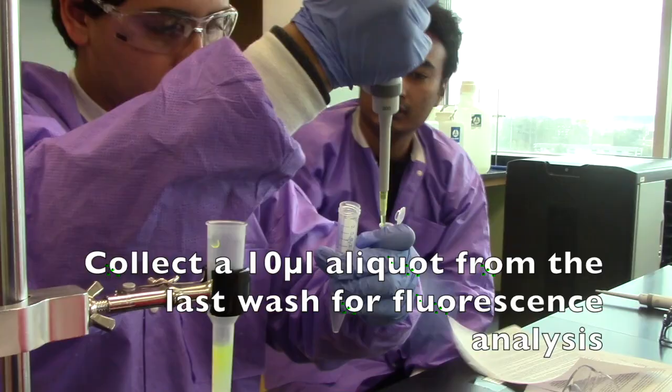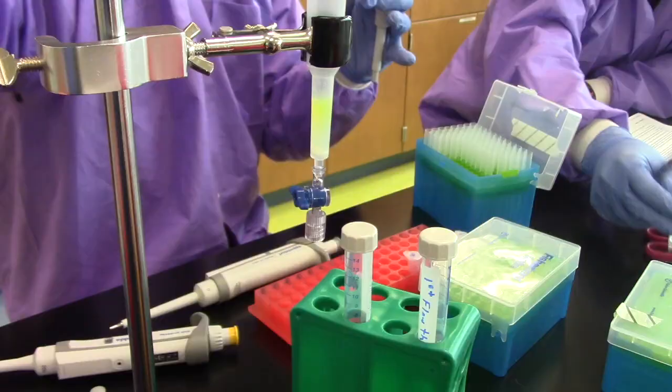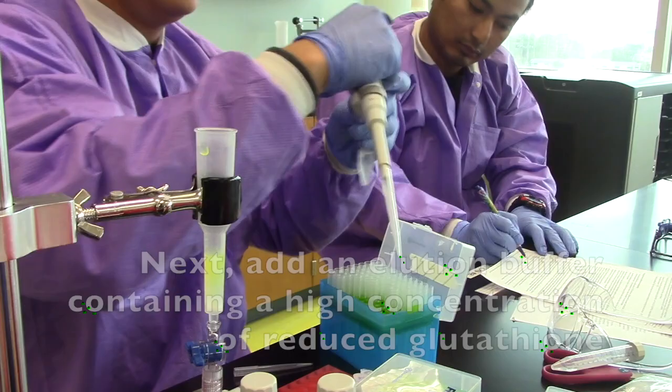Next, add an elution buffer containing a high concentration of reduced glutathione. This enables you to compete for binding with GST Campari on the glutathione resin. This will cause GST Campari to dissociate from the column and flow through.